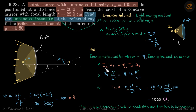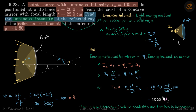Since energy equals intensity times omega, we have i2 times omega-2 equals eta times i-naught times omega-1. The area A cancels out, giving i2 equals eta times (l squared divided by s squared) times i-naught. Substituting the values of l, s, and i-naught gives our answer: 2000 candela.